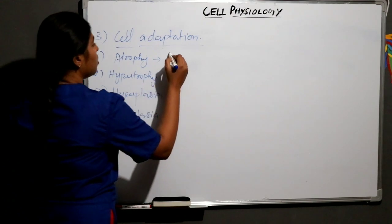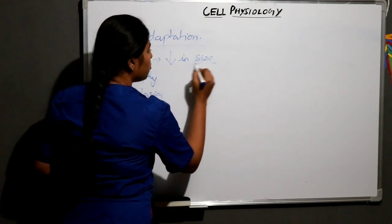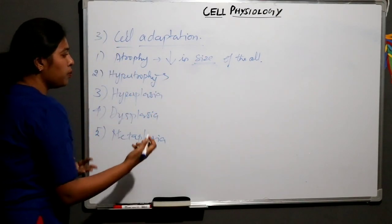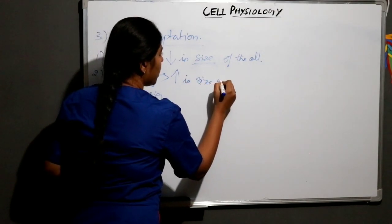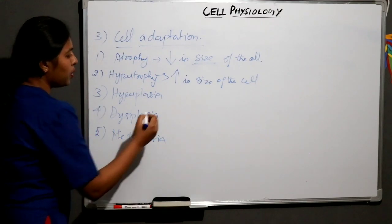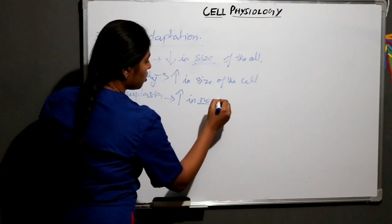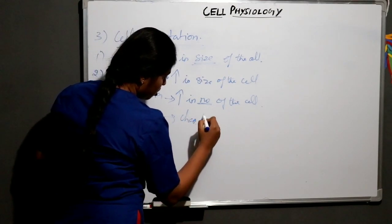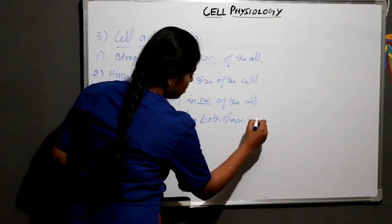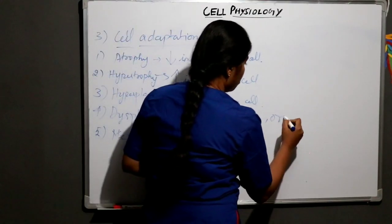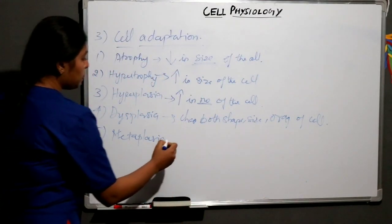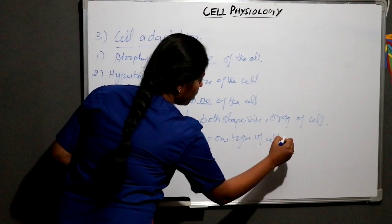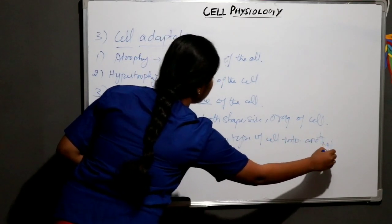Atrophy means decrease in size of the cell. Hypertrophy is opposite to atrophy — it means increase in size of the cell. Hyperplasia means increase in number of cells. Dysplasia is defined as the change in both shape, size, and organization of the cell. Metaplasia is the change of one type of cell into a totally different type — it is called metaplasia.